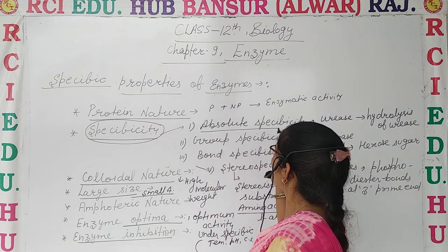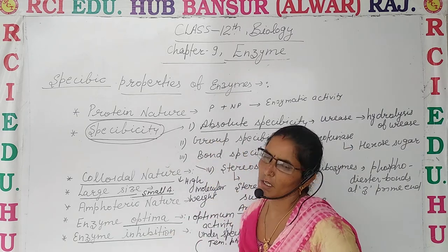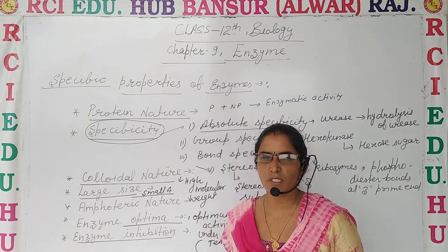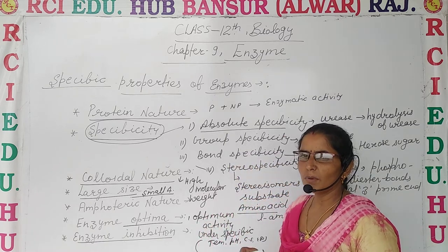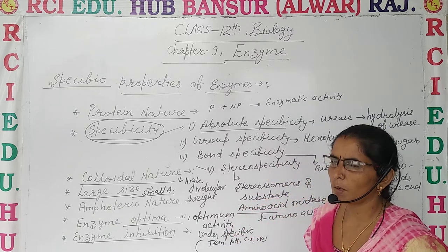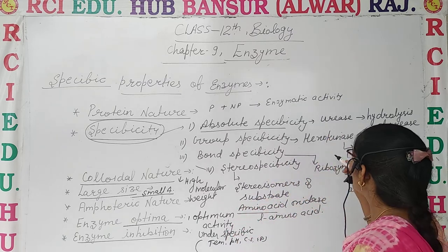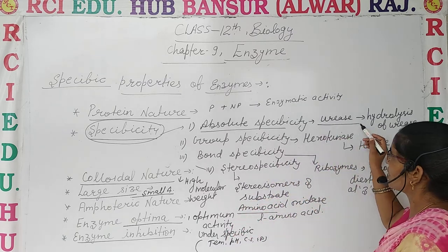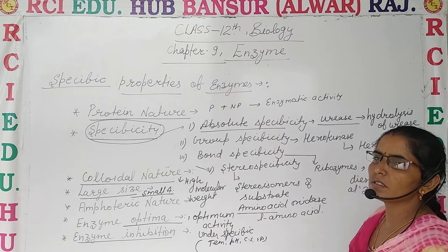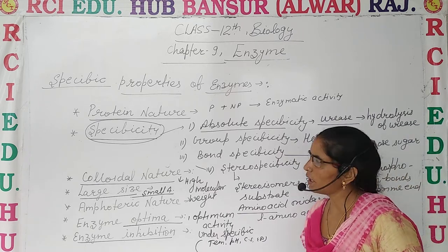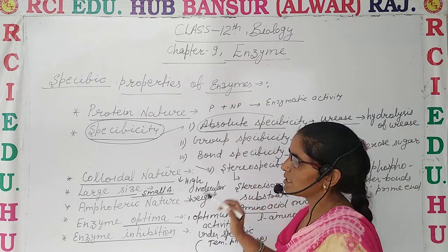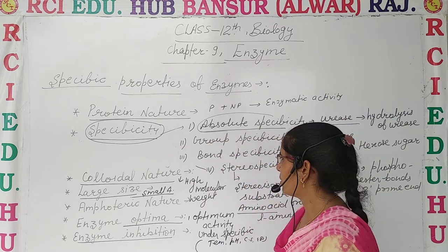The first is absolute specificity. As the name suggests, absolute specificity means some enzymes can catalyze only one specific type of reaction. For example, urease enzyme — it can only catalyze the hydrolysis of urea. This is known as the absolute specificity of the enzyme.